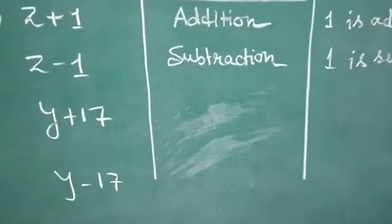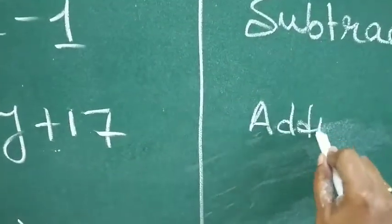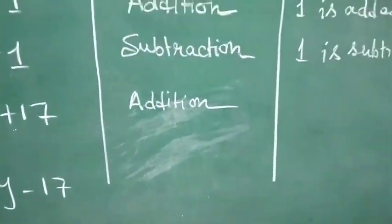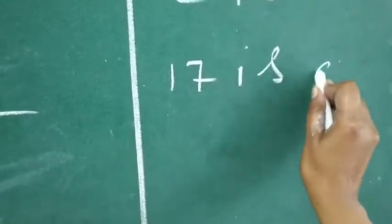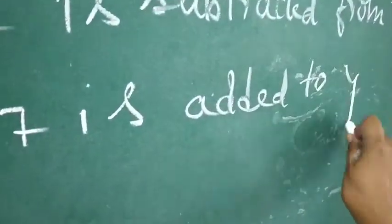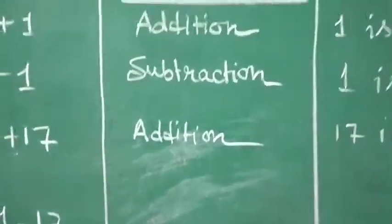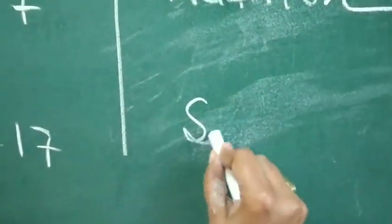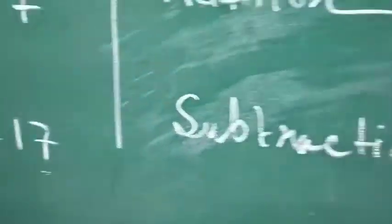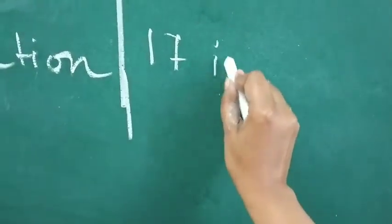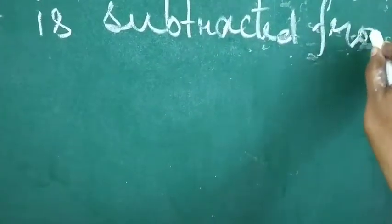Now, in the next one, again addition will be the operation because here plus sign is given. So, here, addition. And how it is formed? We will write 17 is added to y. And then, in the last one, y minus 17. Again, we will write subtraction under operation. And how it is formed? 17 is subtracted from y. So, we will write 17 is subtracted from y.